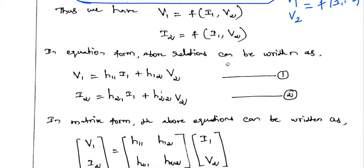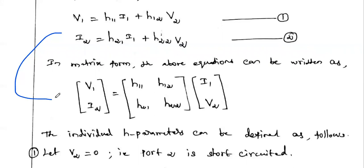In the Z-parameter all four parameters are impedances, and in the Y-parameter all four are admittances. But here h11 is input impedance, h21 is current gain, h12 is voltage gain, and h22 is output admittance — a mixing of impedance, admittance, current gain, and voltage gain. That is why this parameter is named the hybrid parameter.